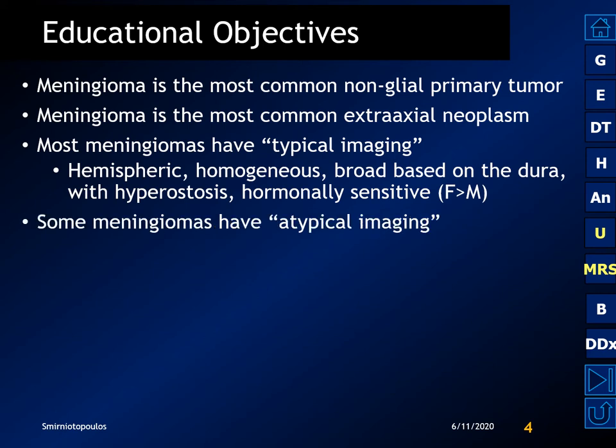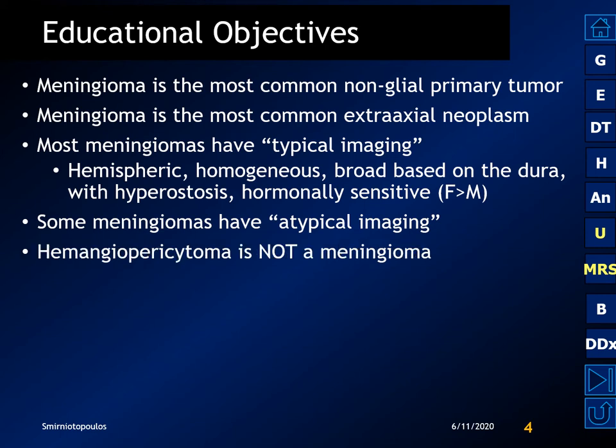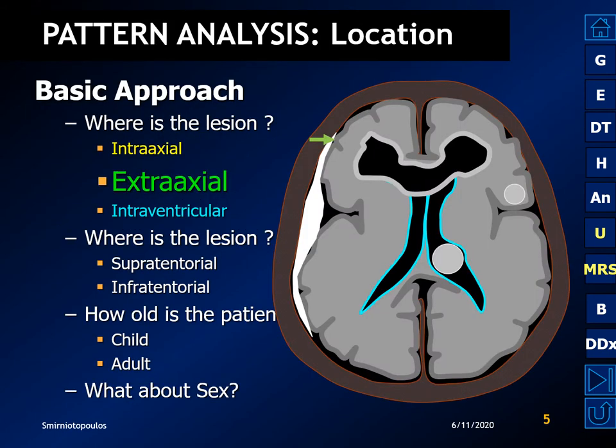Some meningiomas have atypical imaging and yet will be histologically benign. A hemangiopericytoma is a totally different tumor — it's not a meningioma.